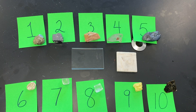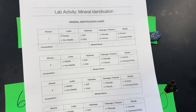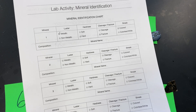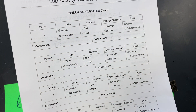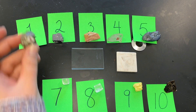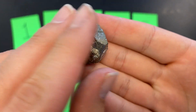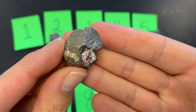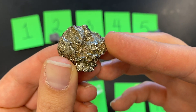Let's do number one together. Open this in Cami — I have a physical copy here because this is the best way to show it to you. For our first mineral, as you can see I have it written down as metallic. If you look at this mineral, it does have a metallic luster.